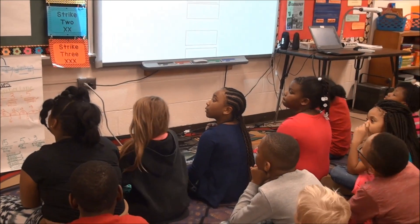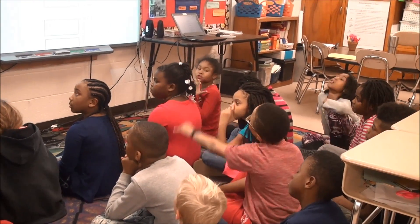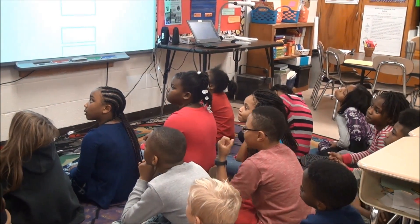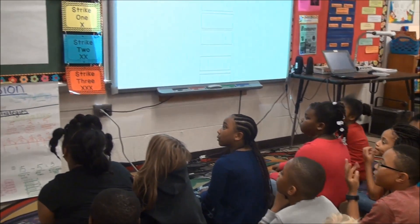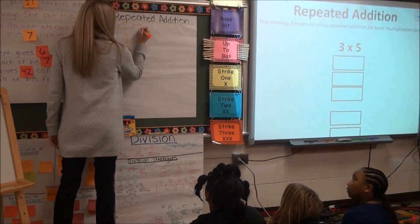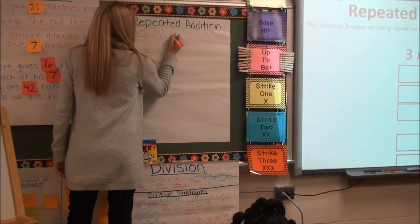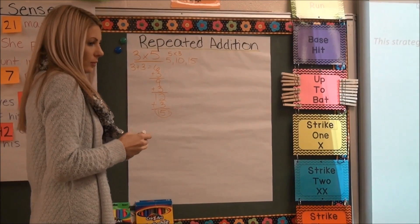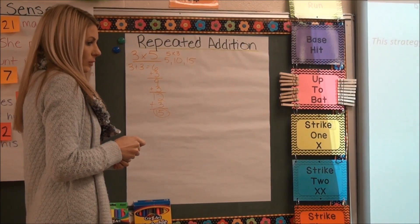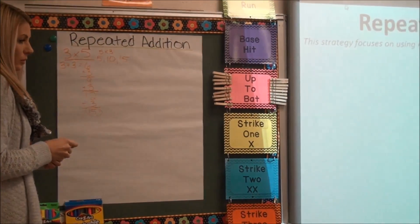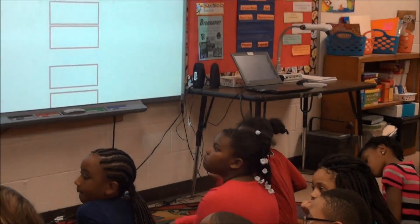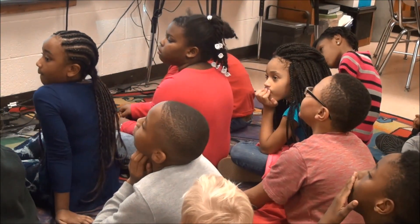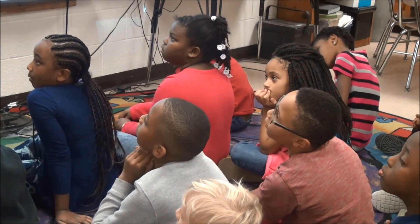Nicholas: I know that I can just switch the numbers around, like 5 times 3, and I just counted on my fingers — 5, 10, 15. So you get 5, 10, 15. Nicholas, how did you know you could do that? Because last time we did the same thing, and we could easily just switch the whole number around, but in subtraction you can't do that.